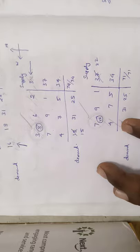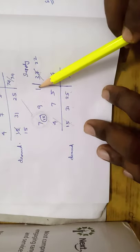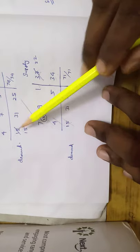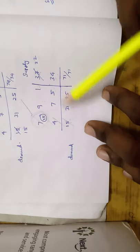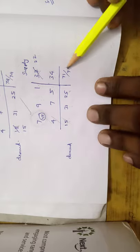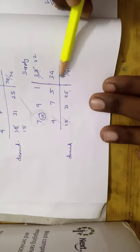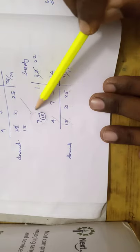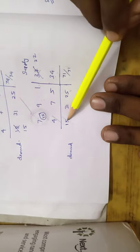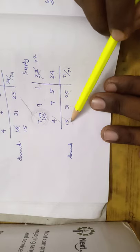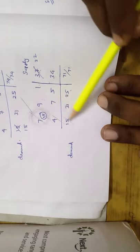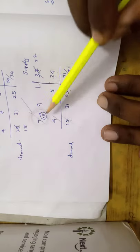Remaining values are cost 7, 9, 1, 4, 7, 5. Supply values are 37, 34 and demand values are 15, 31, 25. Supply total is 71 and demand total is 71 — balanced. The new North West corner is 7. Corresponding supply is 37 and demand is 15. The minimum is 15, so allocate 15 to cost 7. Cross out the column. Supply becomes 37 minus 15 equals 22.